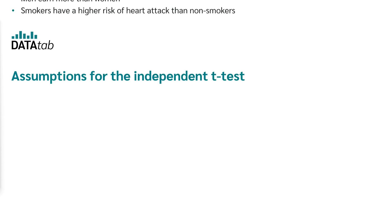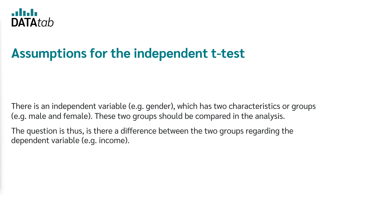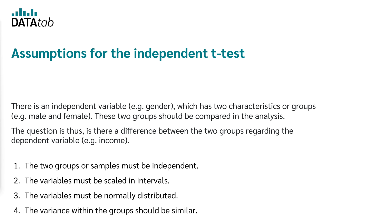What are the assumptions for the independent t-test? There is an independent variable — for example, gender — which has two characteristics or groups, such as male and female. The question is whether there is a difference between the two groups regarding a dependent variable, for example income. There are four main assumptions: the two groups must be independent, the variables must be interval scaled, the variables must be normally distributed, and the variance within the groups should be the same.